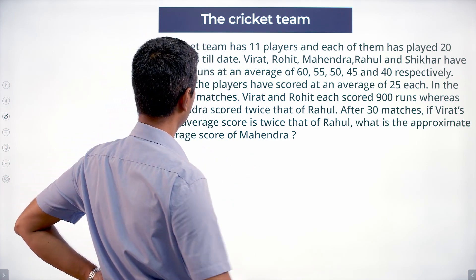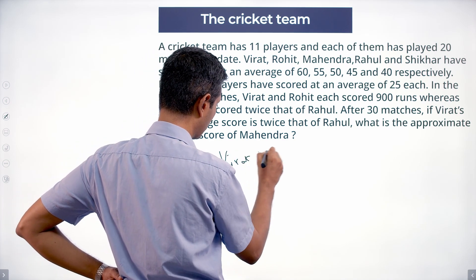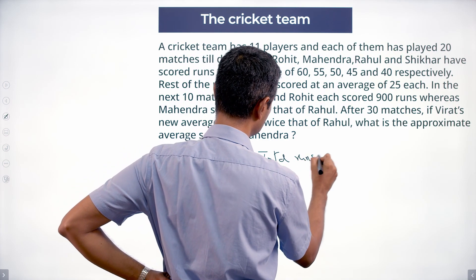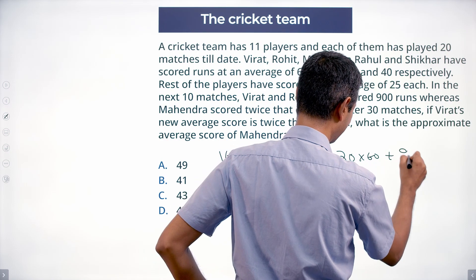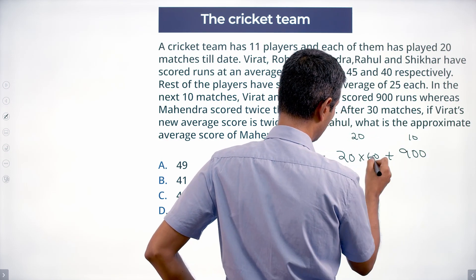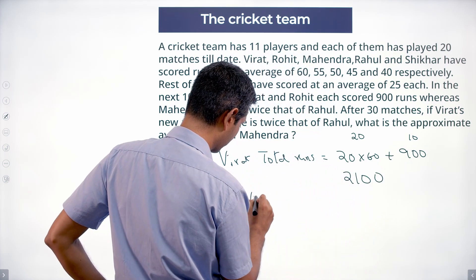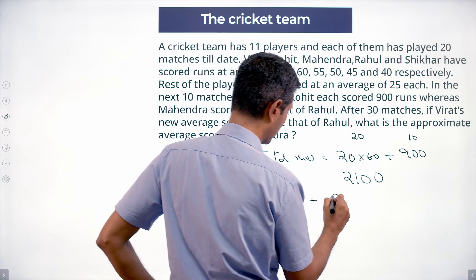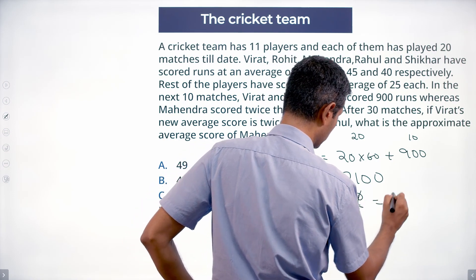Virat had at the end of 20 matches an average of 60. Virat's total runs equals 20 × 60 + 900 — the first 20 matches plus the last 10 matches. 20 × 60 is 1200, and 1200 + 900 is 2100. Virat's average is 2100 ÷ 30 total matches, which is 70.